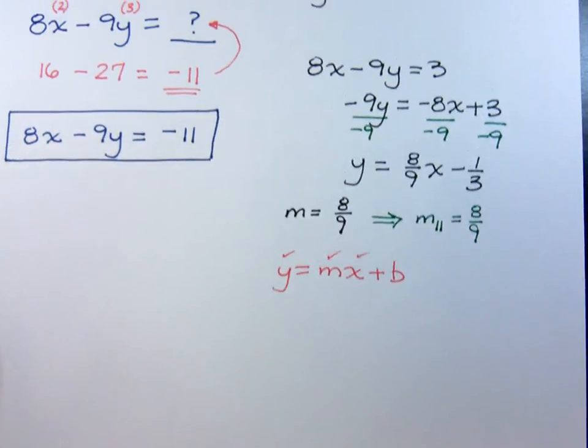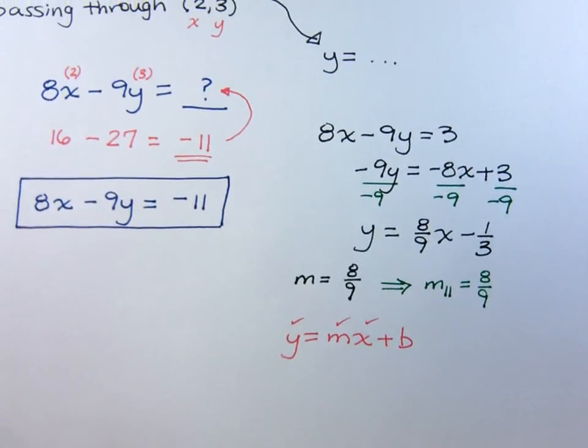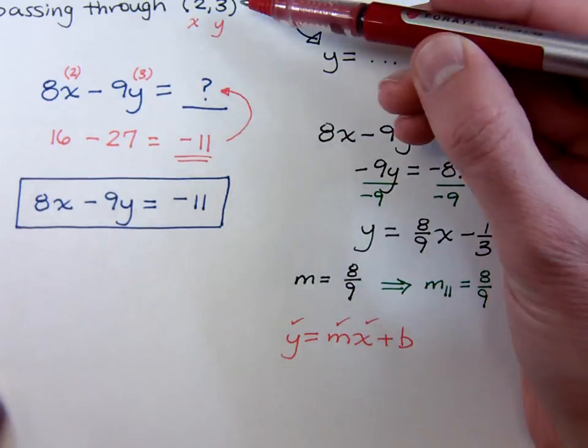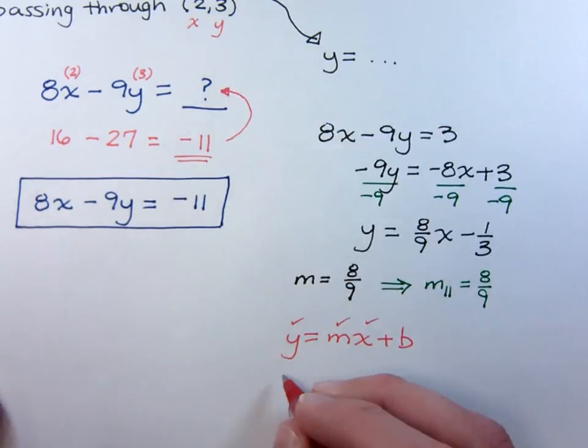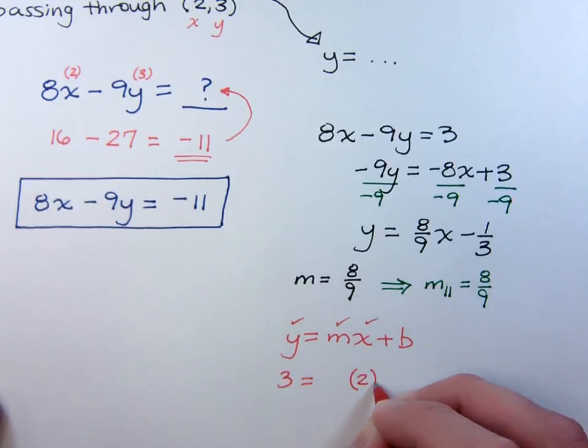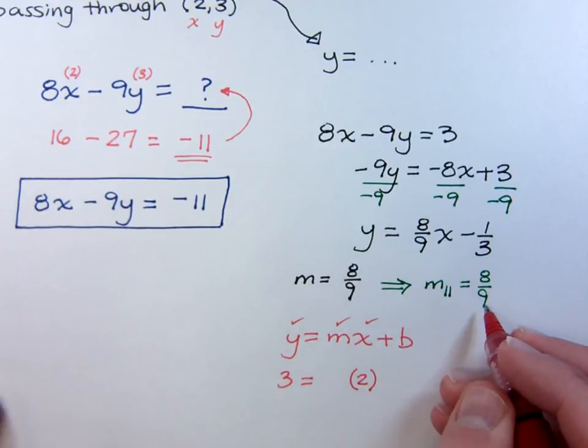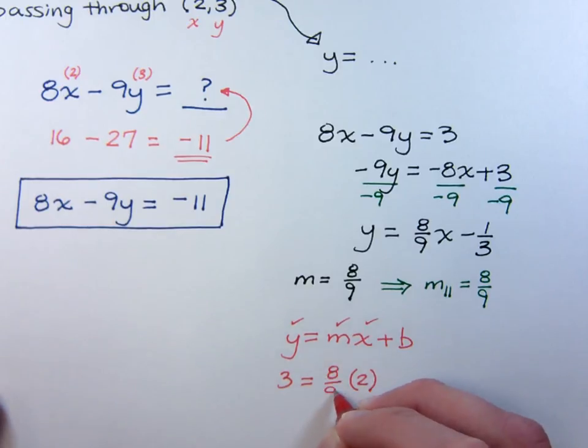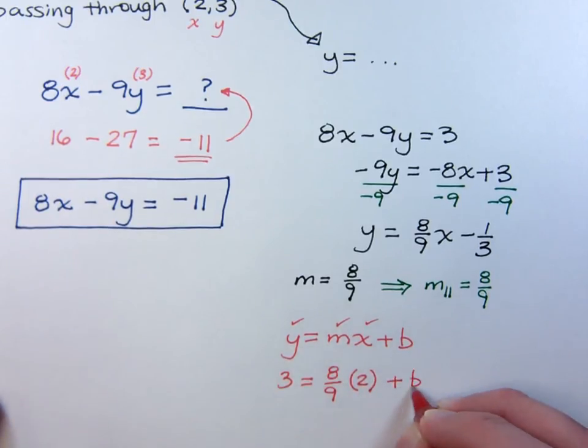What we saw up here is that your x and y are going to be the 2 and the 3, so your y is 3, your x is 2, and your slope comes from this guy, which is going to be 8 over 9. And then, of course, your plus b.